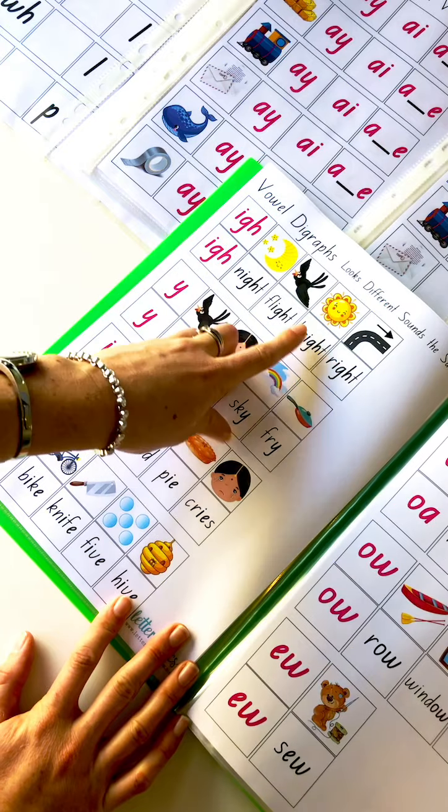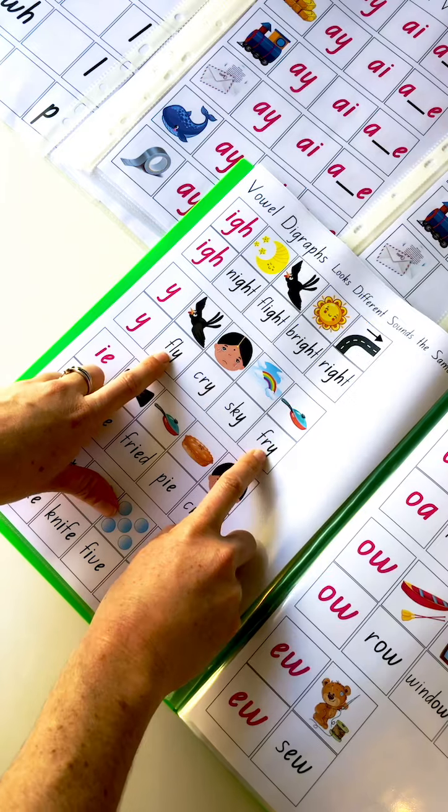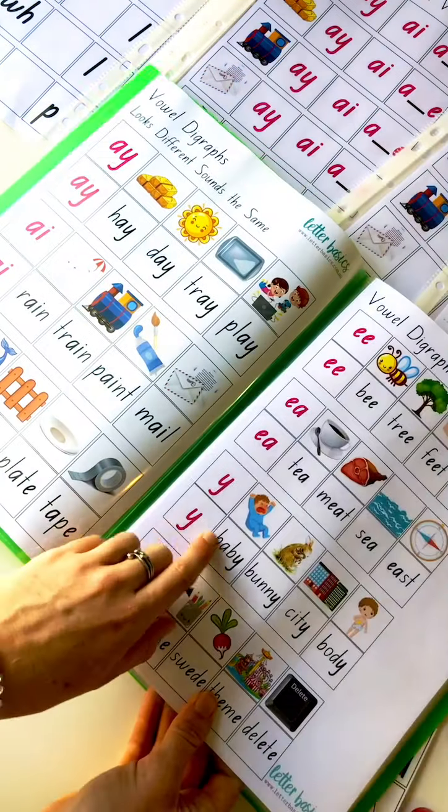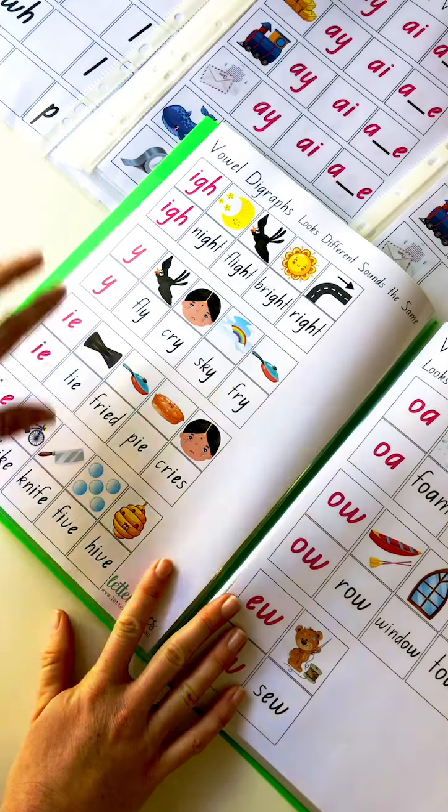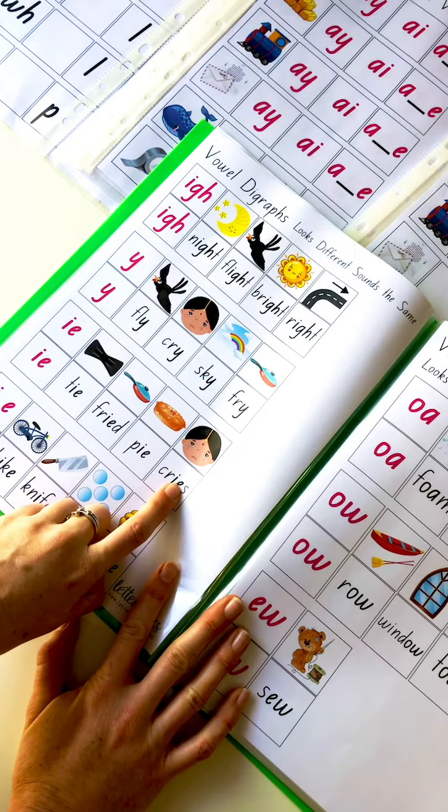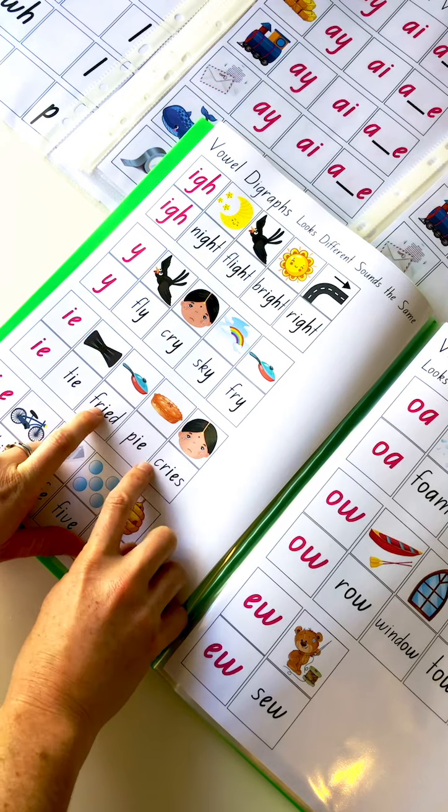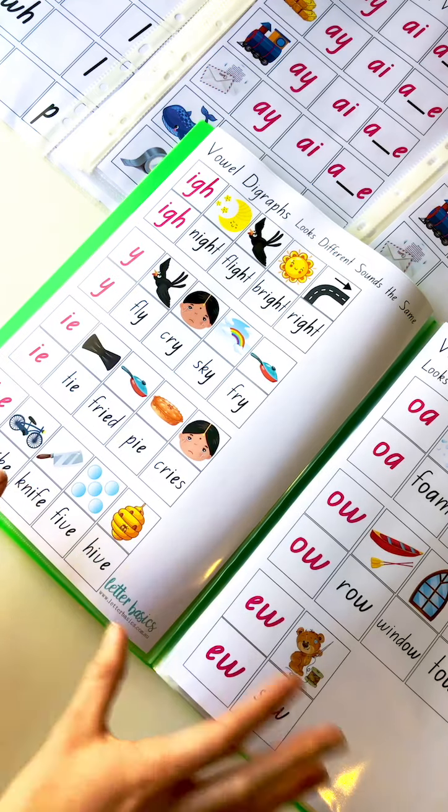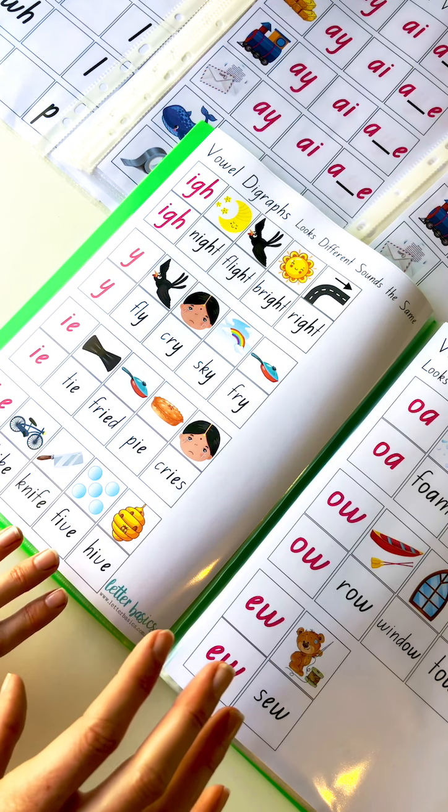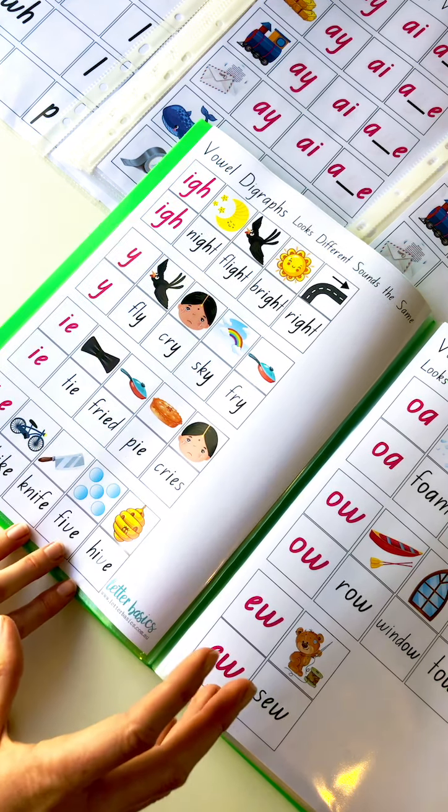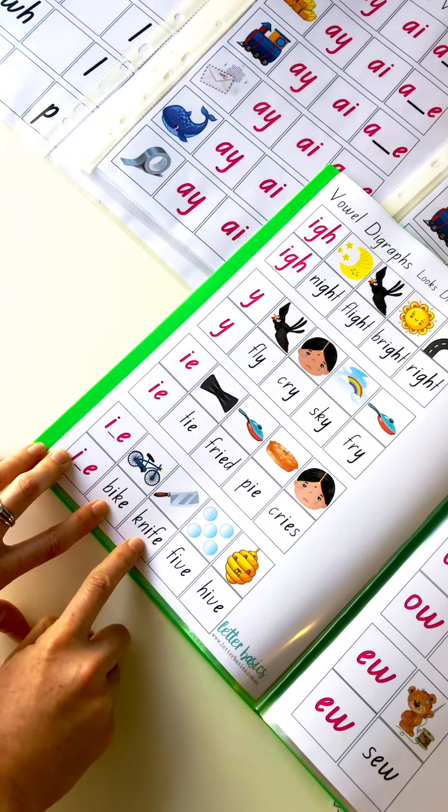We've got I for night, flight, bright, right. I for fly, cry, sky, fry. Now this I at the end of the word looks the same as this E at the end of the word. We'll cover that again soon. I for tie, fried, pie, cries. This one we've included suffixes because that's the only way you get the IE in the middle of the word. Otherwise I haven't dealt with suffixes yet. That will be stage eight, six. So seven will be R controlled vowels. We haven't dealt with that here either. So that's coming next. We've got I again for bike, knife, five, hive.